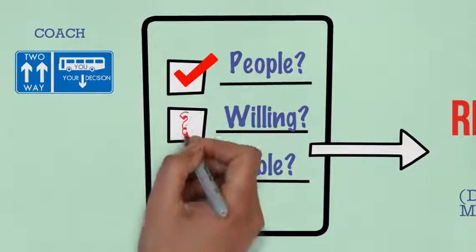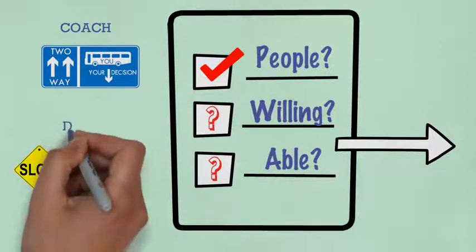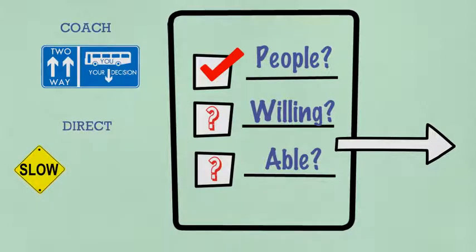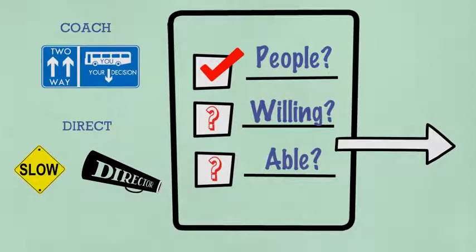However, someone that lacks both the will and skill to complete a task will need a lot of time from you as their manager. The directing leadership style would be adopted, requiring you to guide the team member through every step of the task, telling them what to do.